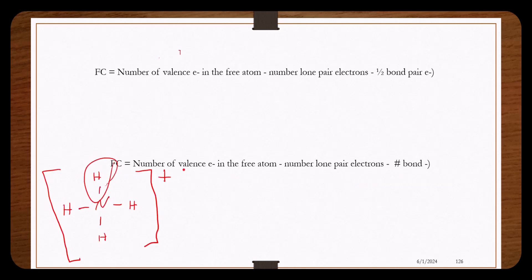Hydrogen has one valence electron, it has no lone pair electrons, and it has one bond. So we come up with a formal charge of zero.